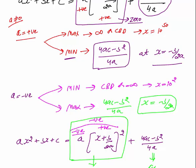Briefly summarizing: a quadratic expression can have maximum or minimum value depending on a. If a is positive, maximum value is infinity or cannot be determined; minimum value will be (4ac − b²)/(4a) at x = −b/(2a). Whenever a is negative, minimum value will be minus infinity or cannot be determined; maximum value will be (4ac − b²)/(4a) at x = −b/(2a). So this is the general formula to calculate the maximum or minimum value. If you can remember this formula, you can easily calculate the maximum or minimum value of any quadratic expression.